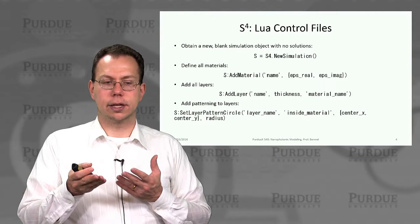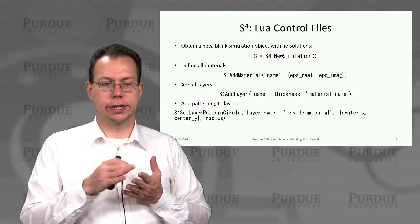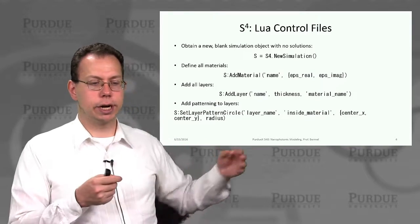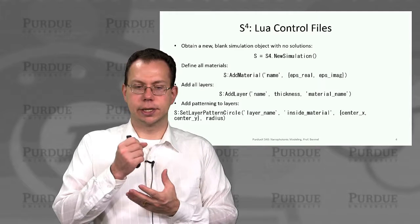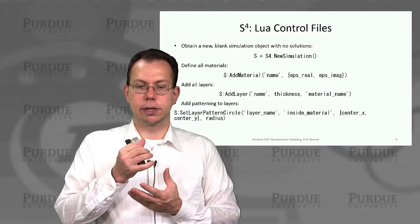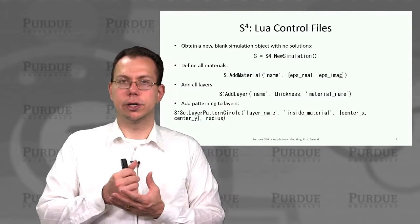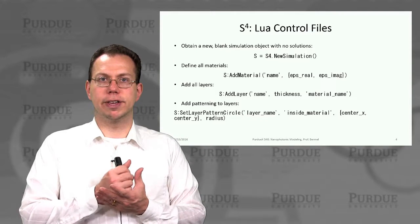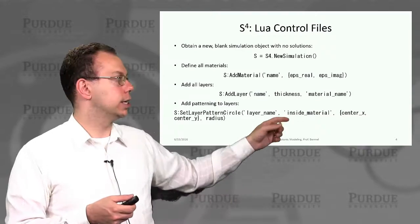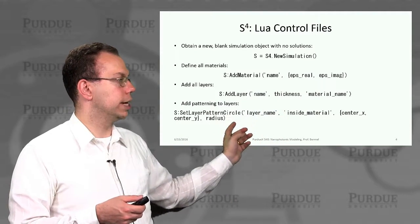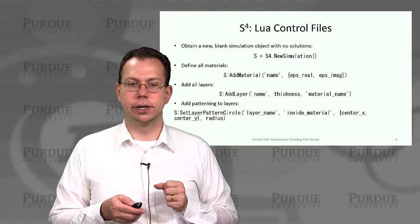As a fourth step, you could actually add patterning in the lateral direction to the layers. This is just one example where you would add circle-like features, where the new so-called inside material would displace the previous material in the middle of the circle. It would have a certain center position and a certain radius, so you're basically just specifying that geometry explicitly.